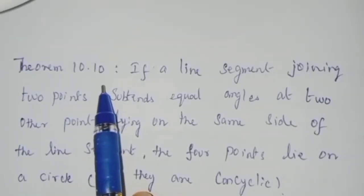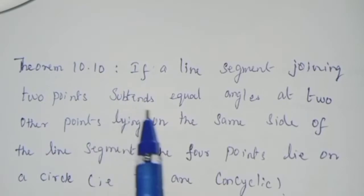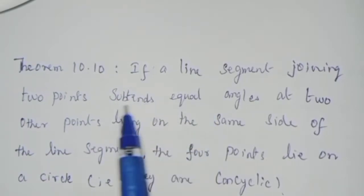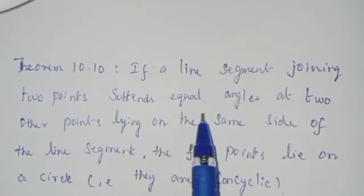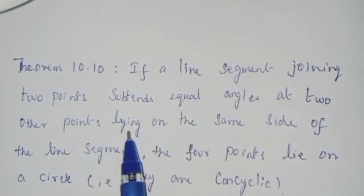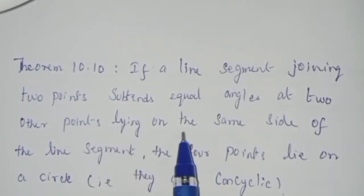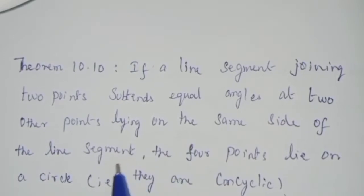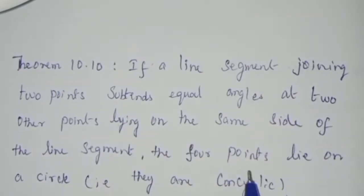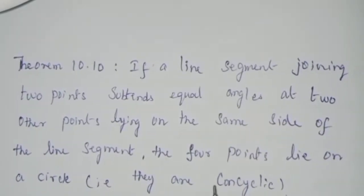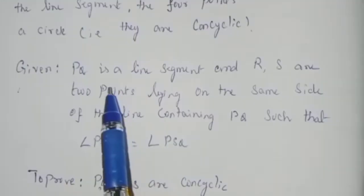Now let's look at Theorem 10.10. If a line segment joining 2 points subtends equal angles at 2 other points lying on the same side of the line segment, the 4 points lie on the circle — that is, they are concyclic.